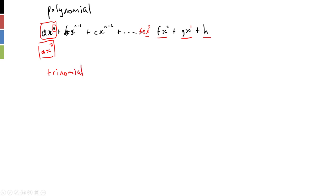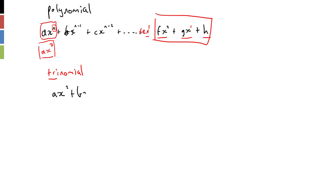Okay, so what are we looking at? We're looking at a trinomial. A trinomial is a polynomial — tri, guess what, three terms. So we are generally looking at ax^2 plus bx plus c — three terms. We start with polynomial, and now we're looking at the special case of that: the trinomial where we have three terms.